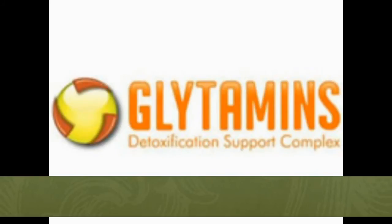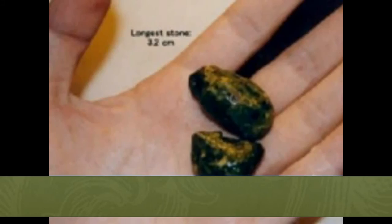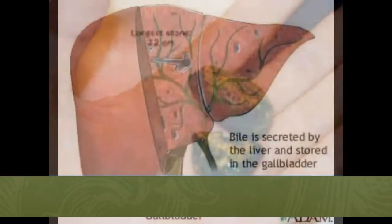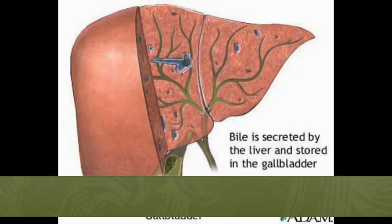Gallstones are nothing more than coagulated bile. Bile is the green alkaline liquid produced by the liver, which, among other things, helps us digest our food. The liver produces about a liter of bile a day and stores it in a muscular sac called the gallbladder. The gallbladder then squirts this bile down a tube called the common bile duct into the small intestines to mix with the food that comes from the stomach.